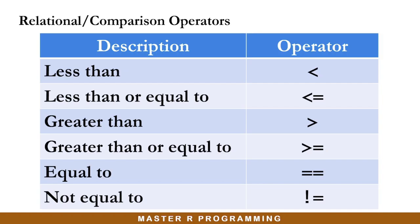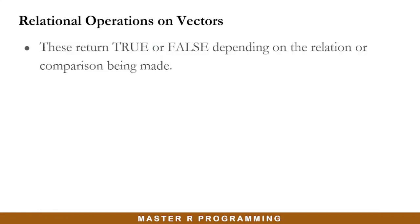We learned earlier that these are the relational or comparison operators available in R. We have the description on the left of this table and the associated symbols describing the operator used for such comparison. In relational operations on vectors, these return true or false depending on the relation or comparison being made.